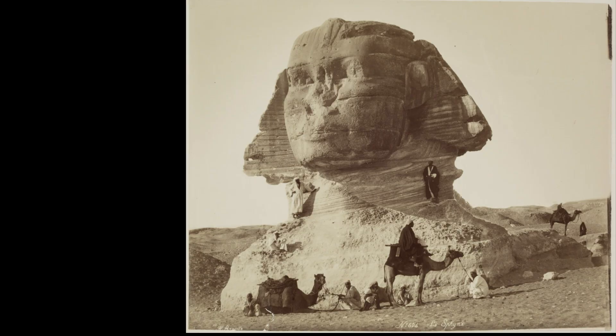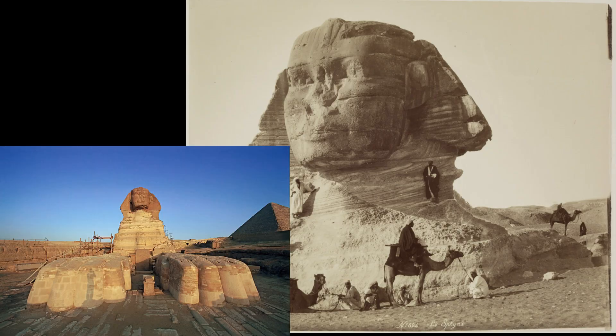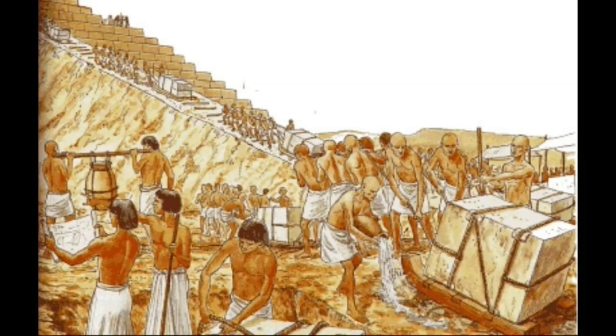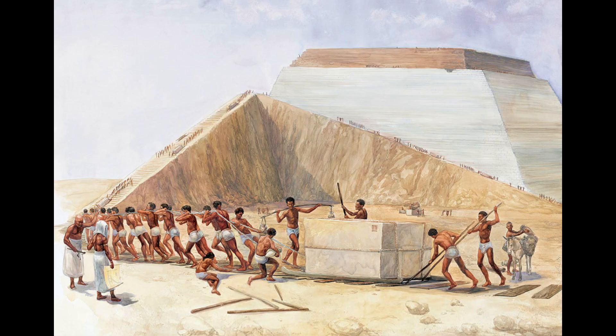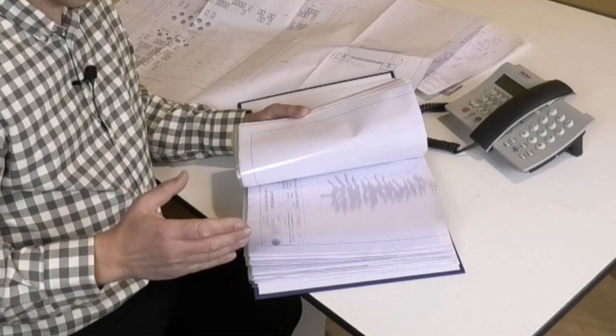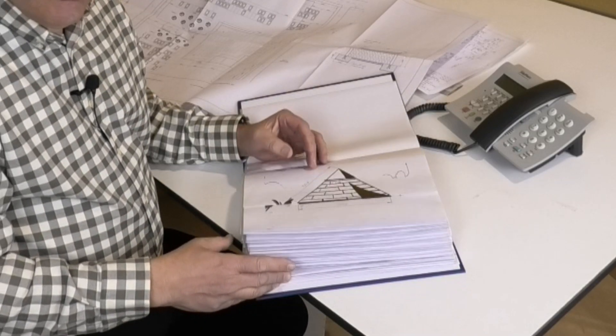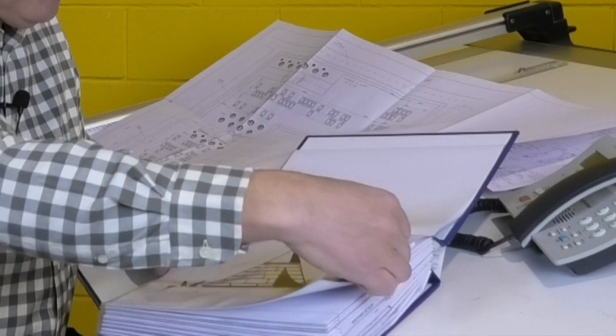Pero no podemos olvidar que igual que la Gran Esfinge de Egipto estuvo semienterrada, hay una teoría que dice que la magnitud de las pirámides podría ser diferente debido a unos planos mal plegados que se han descubierto recientemente.